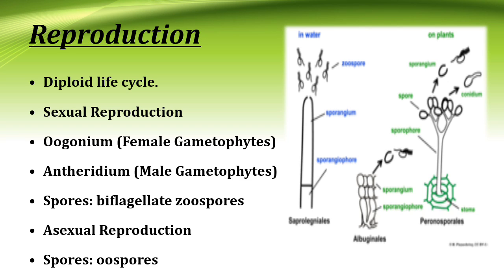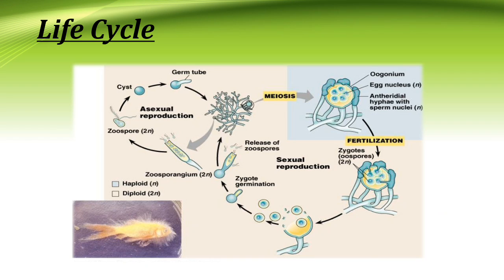Reproduction: Oomycetes have a diploid life cycle. They have sexual reproduction involving the oogonium as female and antheridium as male. Spores may be biflagellate zoospores. Asexual reproduction occurs with the help of spores, for example oospores. In the life cycle diagram, they can reproduce asexually with the help of zoospores through cyst formation, then germ tube formation, then the oomycete structure is formed. They can also reproduce sexually.